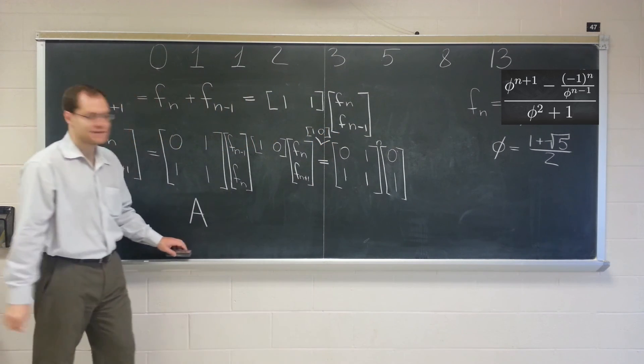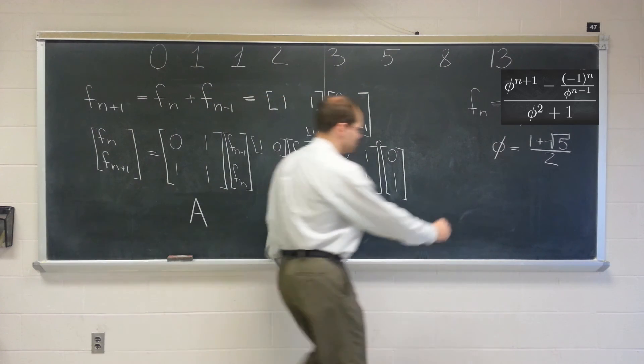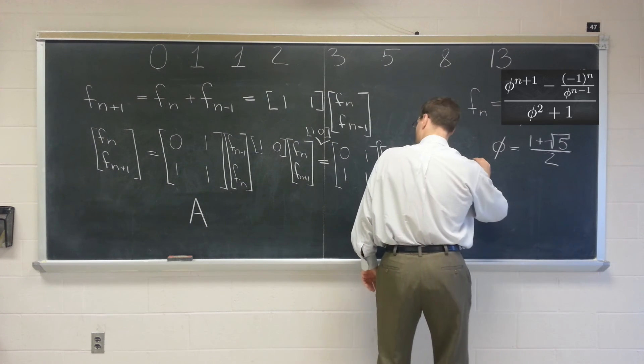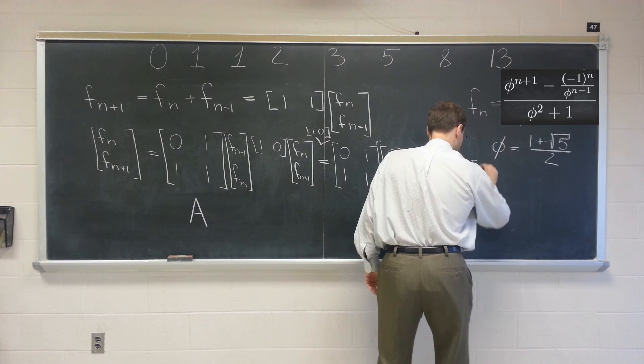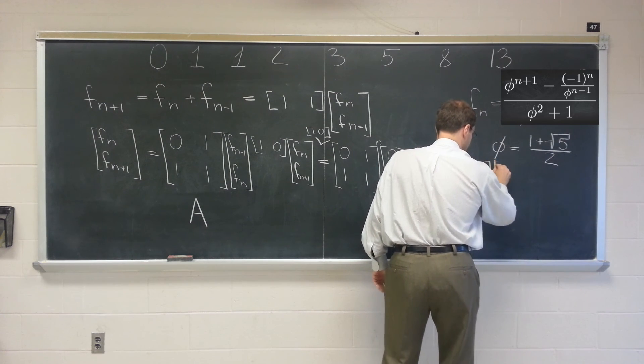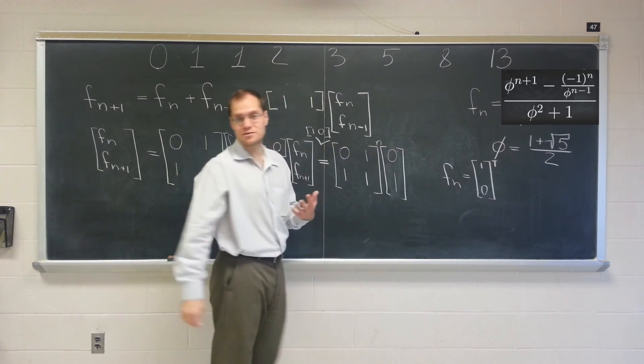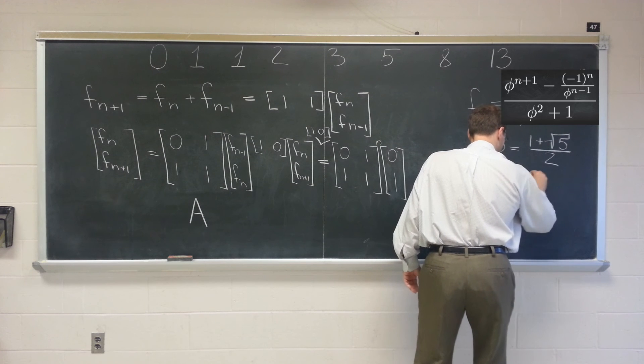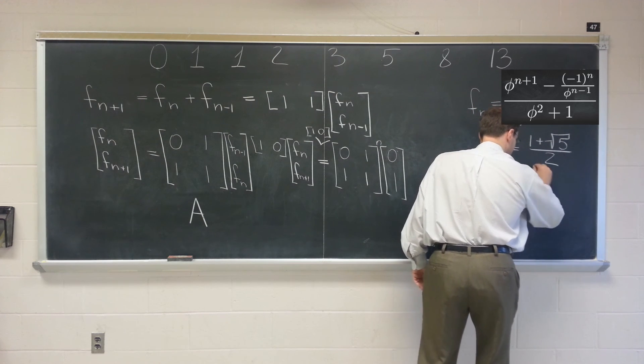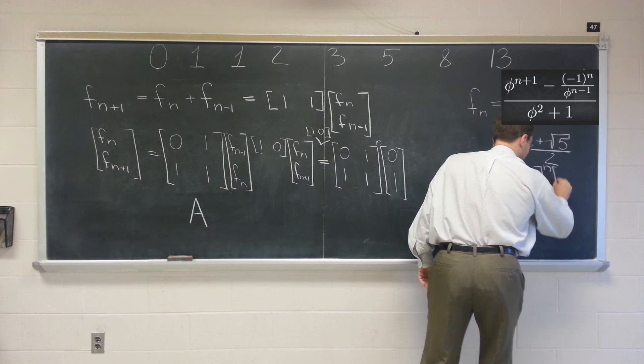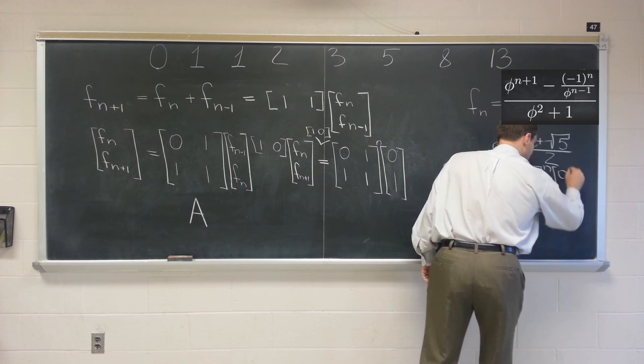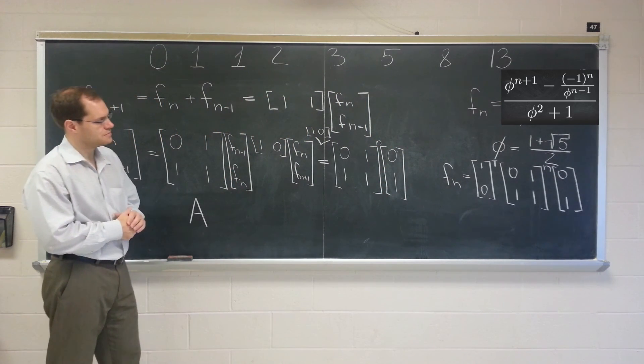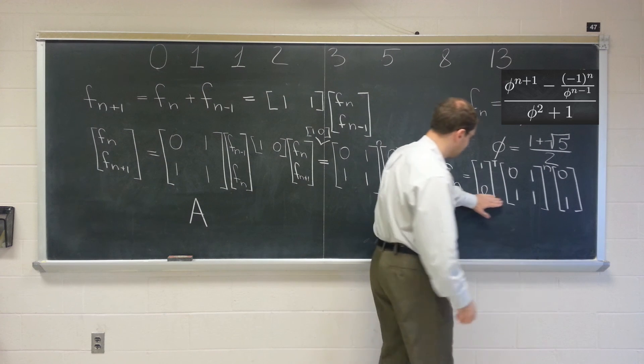And actually as a grand finale of this little segment, let me just write it down. F sub n equals 1, 0 transpose. People who love matrices love the transpose. So why not? F sub n equals 1, 0 times 0, 1, 1, 1 to the nth power times 0, 1. Is that nice? The entire Fibonacci algorithm is captured in matrix form.